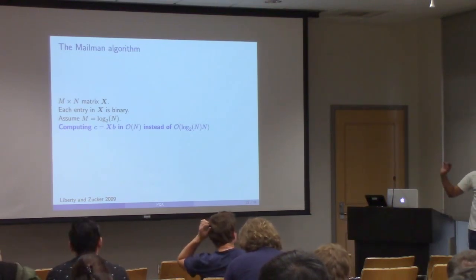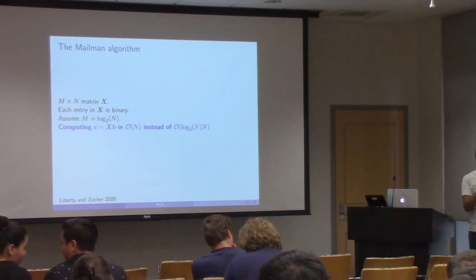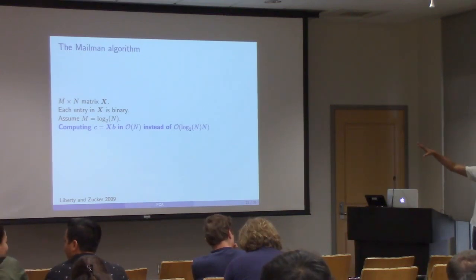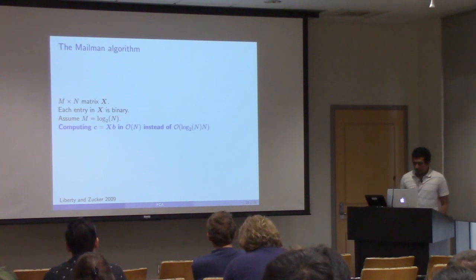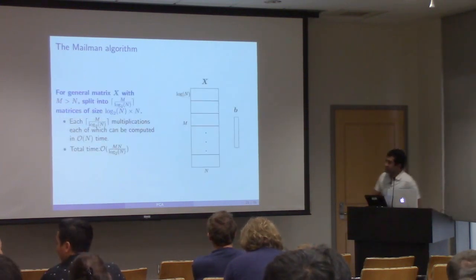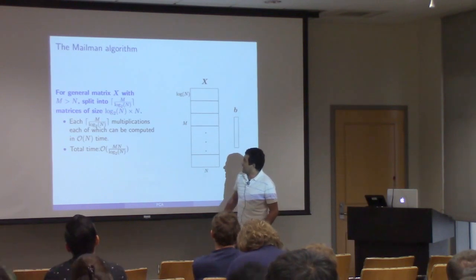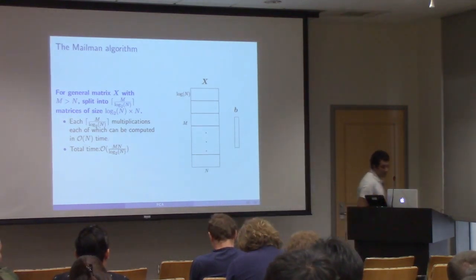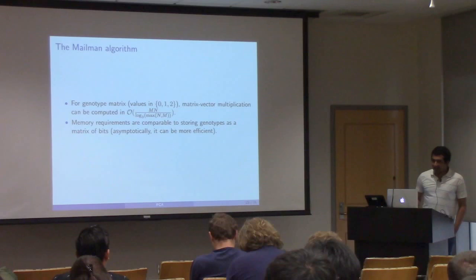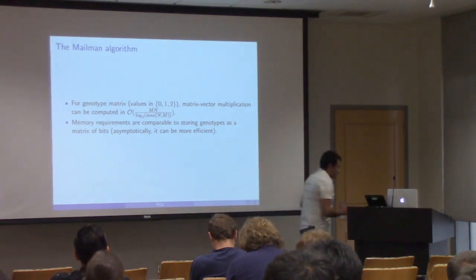We've stuck to this approach partly because we want an algorithm that exactly matches SVD while still giving computational gains. This can be generalized: if you have a matrix which is big, you split it into blocks of size log n by n, and each block is O(n), so the total time is O(MN / log N). This carries over to other matrices — for a ternary matrix, the log just changes from base 2 to base 3, a general result for finite alphabets. Memory is sometimes an even harder constraint than computation time, and it turns out the memory requirements are comparable to storing your genotype as a 0, 1, 2 matrix, so you don't lose much memory-wise.